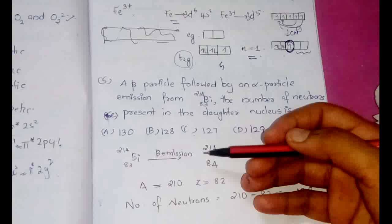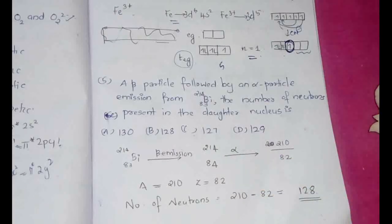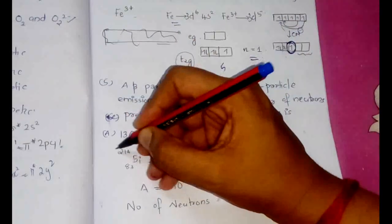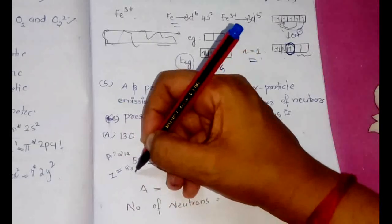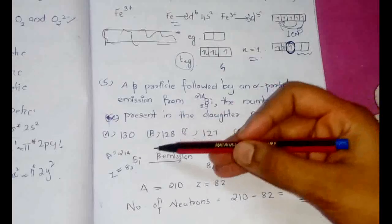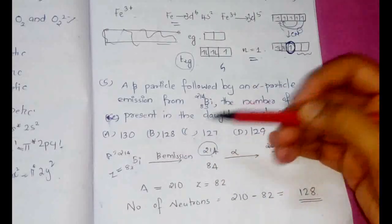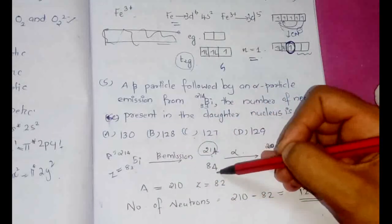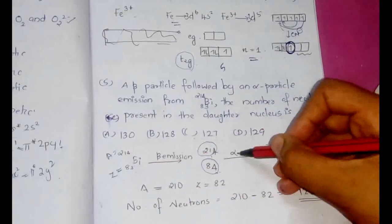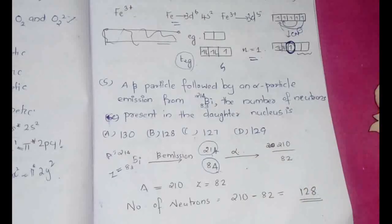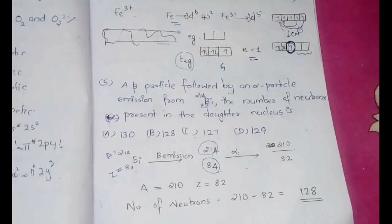So first what happens, a beta emission occurs. So in a beta emission there will be no change in the mass number, mass number a is equal to this. And atomic numbers, z is equal to, there is no change in the mass number, but on beta emission the atomic number increases by 1. So from 83 it becomes 84.